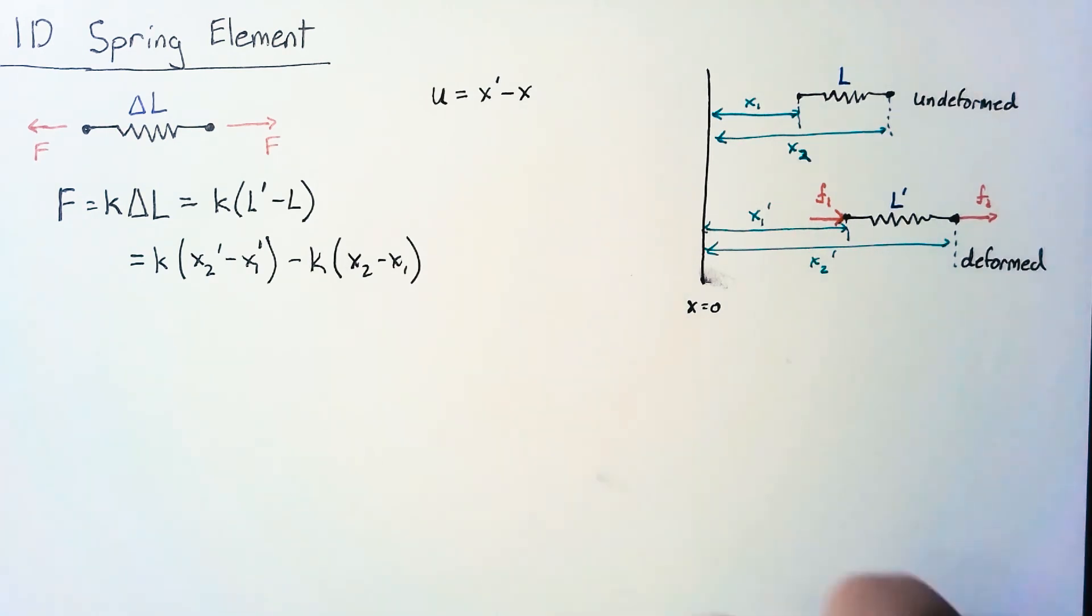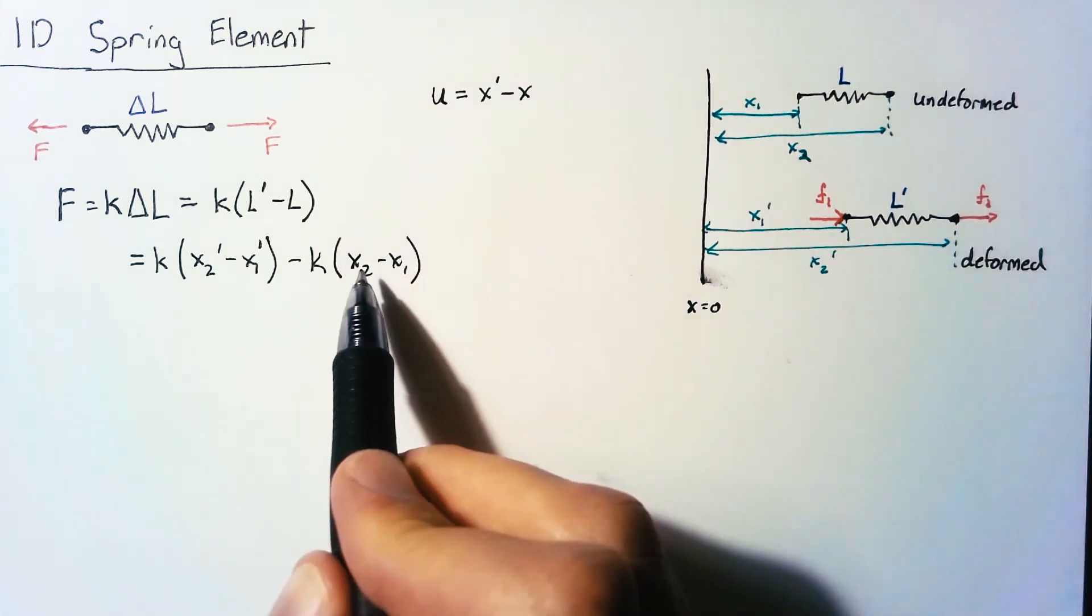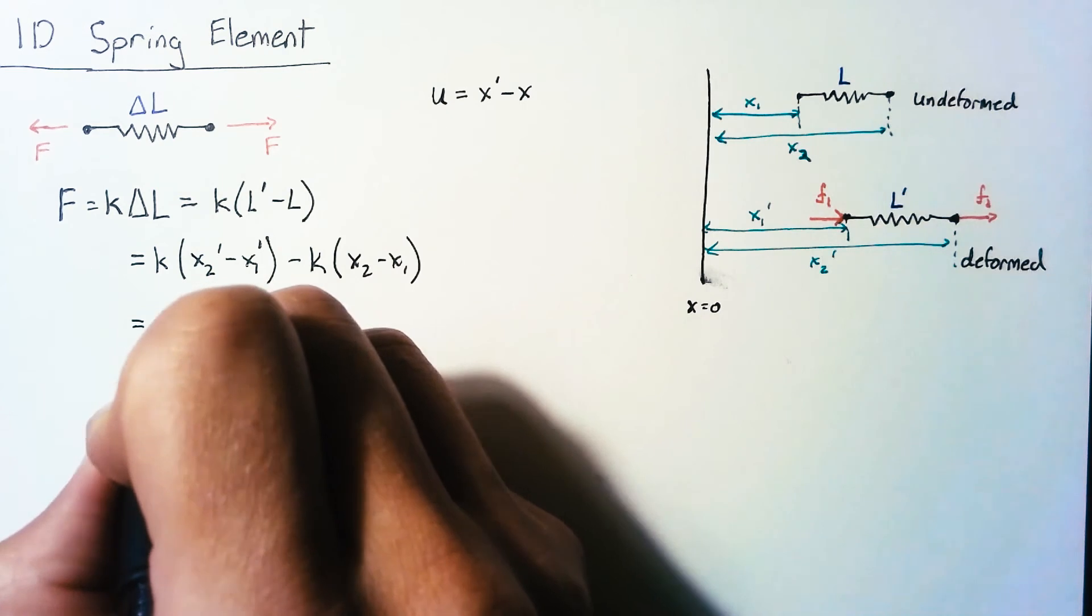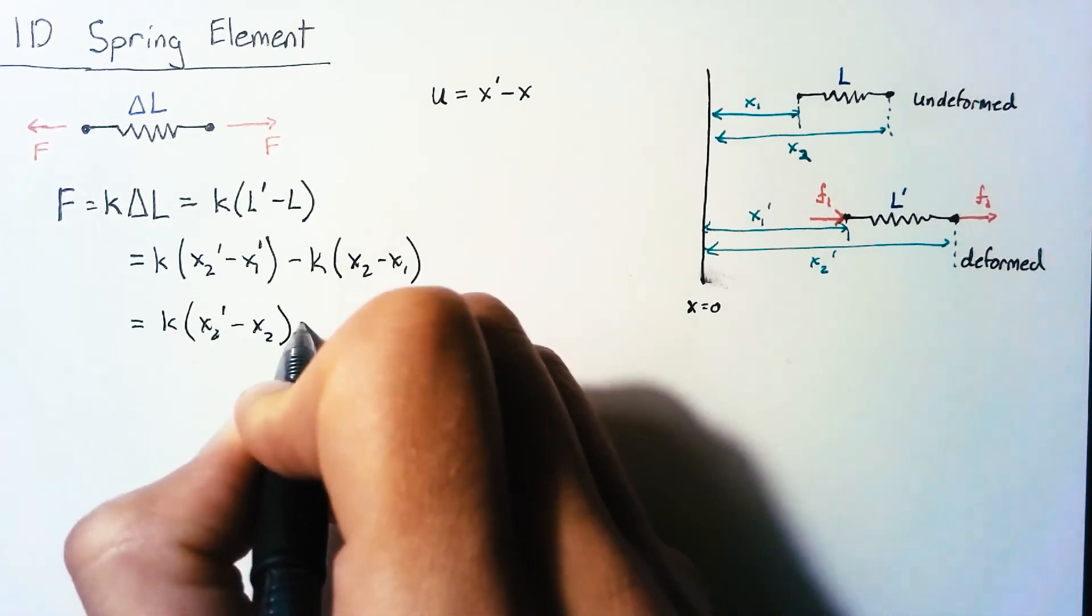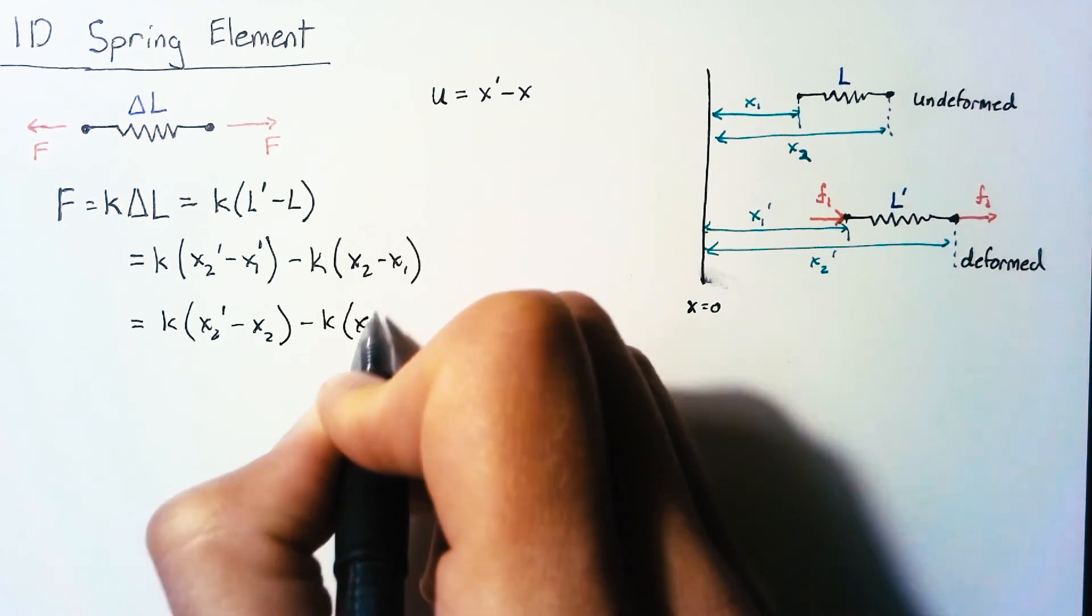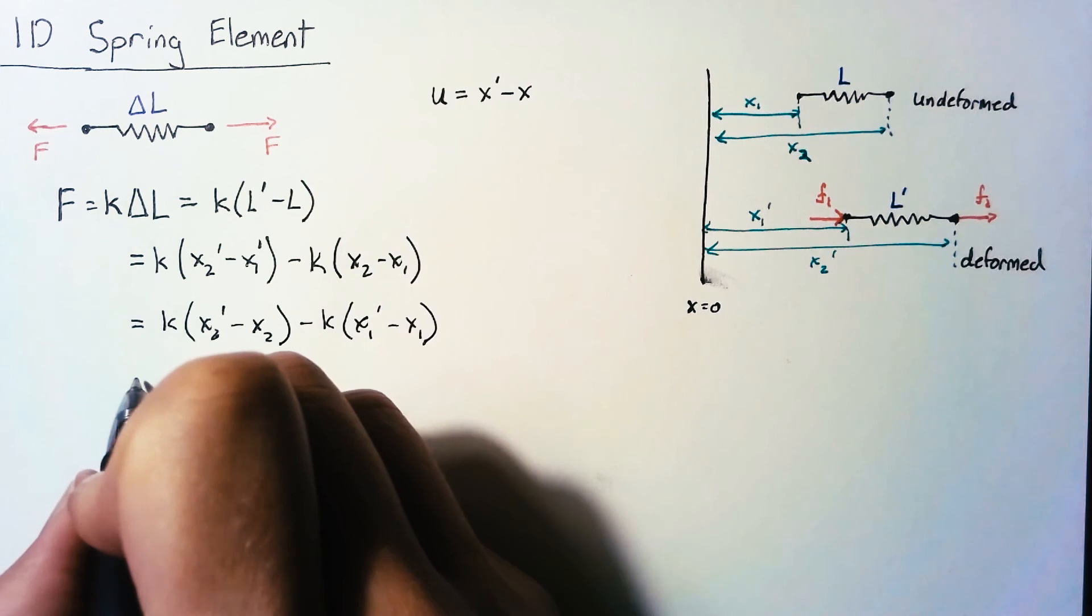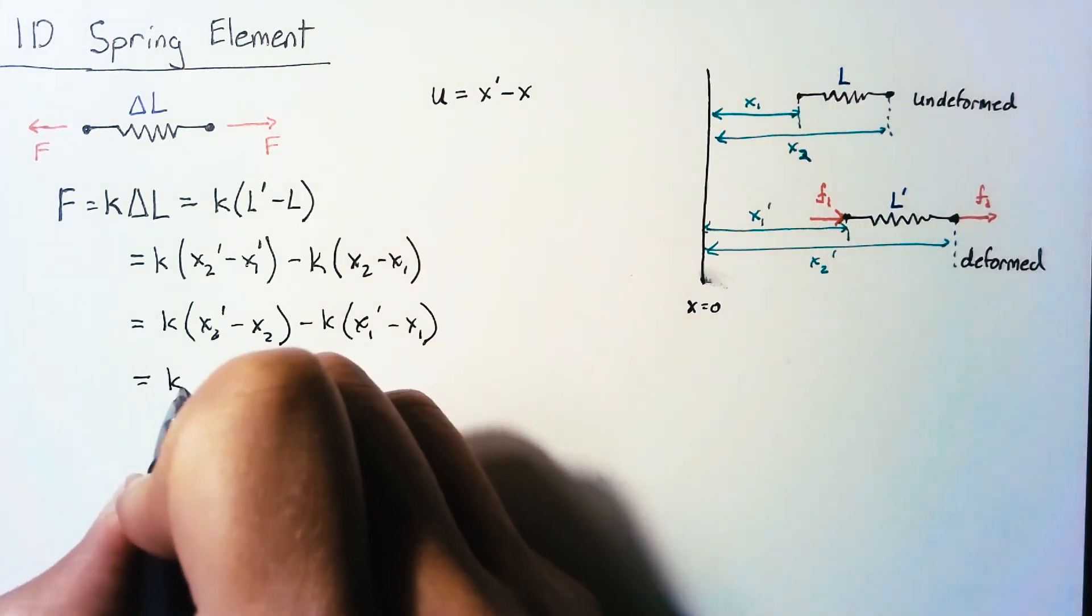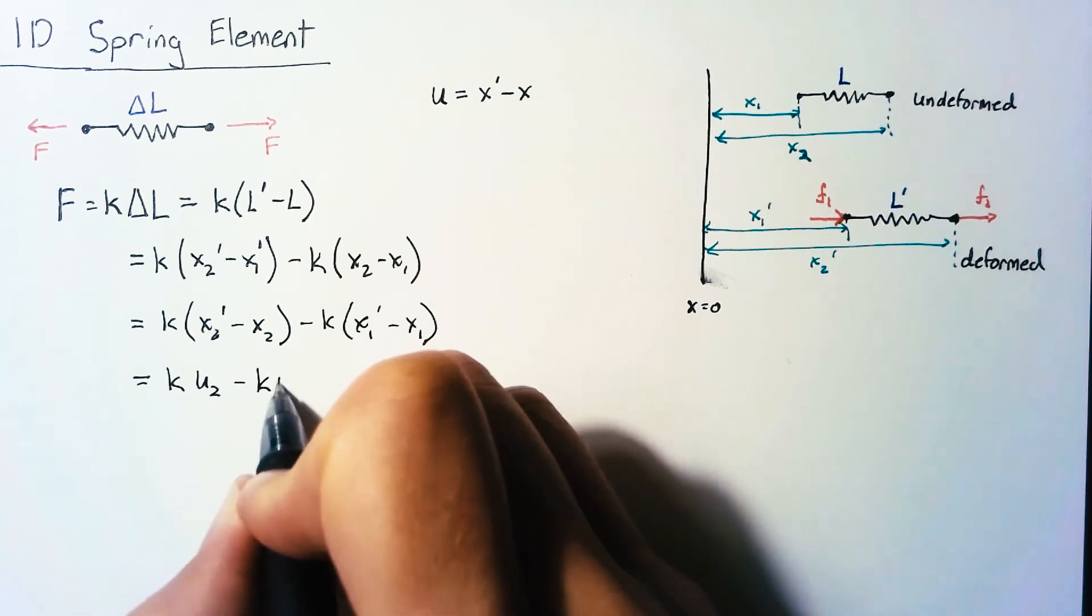So if I want to get x2 prime minus x2 I can just move that over and then move the x1 prime over as well. So I end up with k(x2 prime minus x2) minus k(x1 prime minus x1). And so we end up with k times u2 minus k times u1.